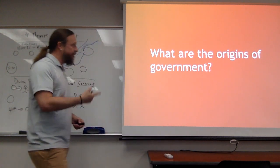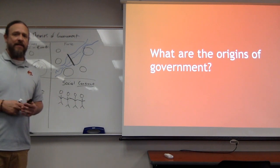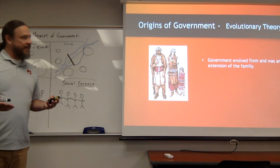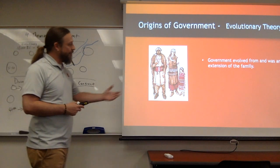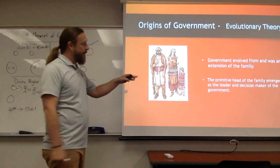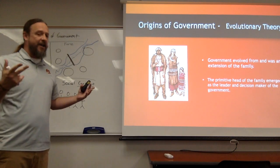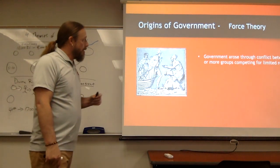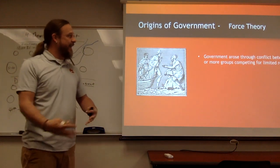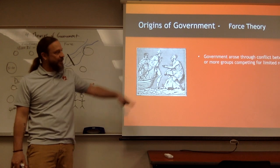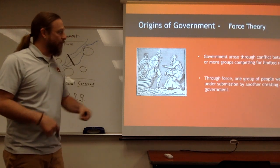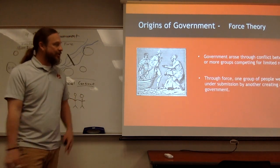One more time, just to see it in word form — what are the origins of government? Government evolved from and was a natural extension of the family. The primitive head of the family emerges as the leader and decision maker. One of those family units becomes the central government for a given area. Competition for limited resources produces conflict, and it is that conflict that creates a new government through submission and force — one group of people is brought under submission, creating another government.